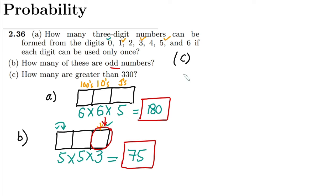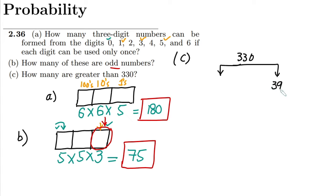Similarly, in part C, we have to find how many of these numbers are greater than 330. To do this, I am going to divide the problem into two parts: numbers greater than 399, and numbers between 330 and 399.